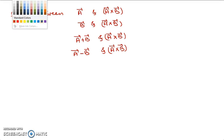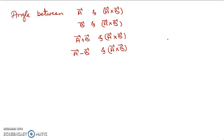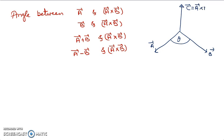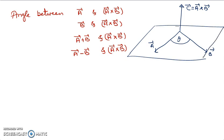Next conceptual question: what is the angle between vector a and a cross b? As we studied in the definition of cross product, if two vectors a and b have a smaller angle θ between them, their cross product c comes out perpendicular to both using the right-hand thumb rule and right-hand screw rule. So c vector is perpendicular to both a and b — meaning the angle between a and a cross b is 90°, and the angle between b and a cross b is also 90°.